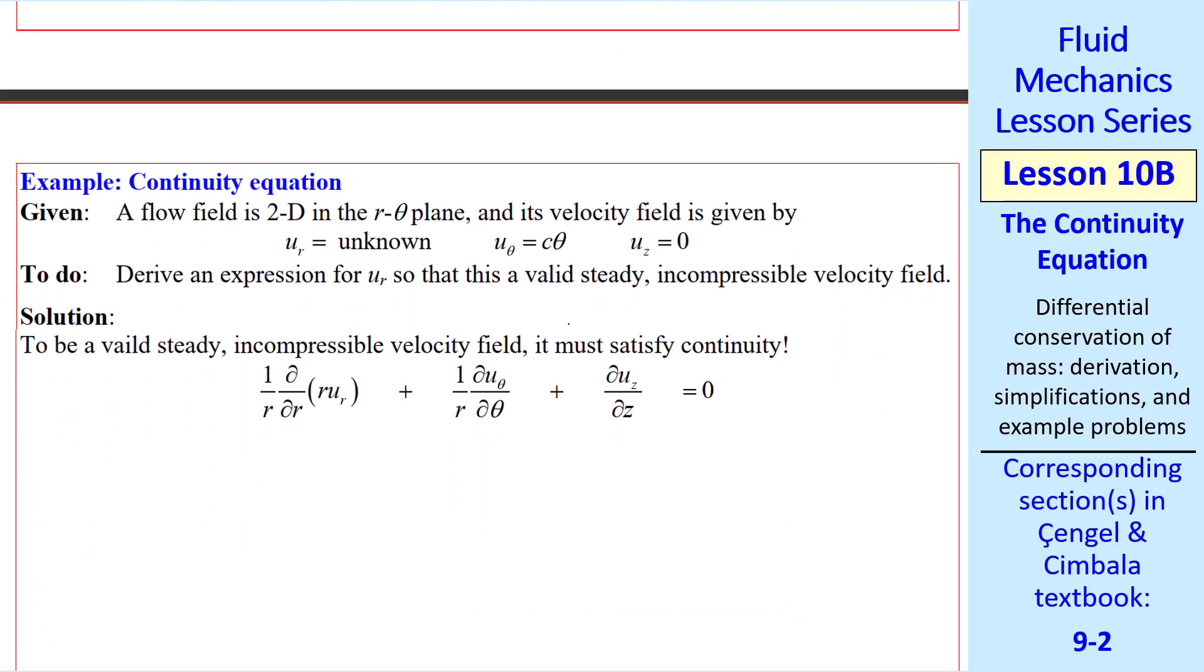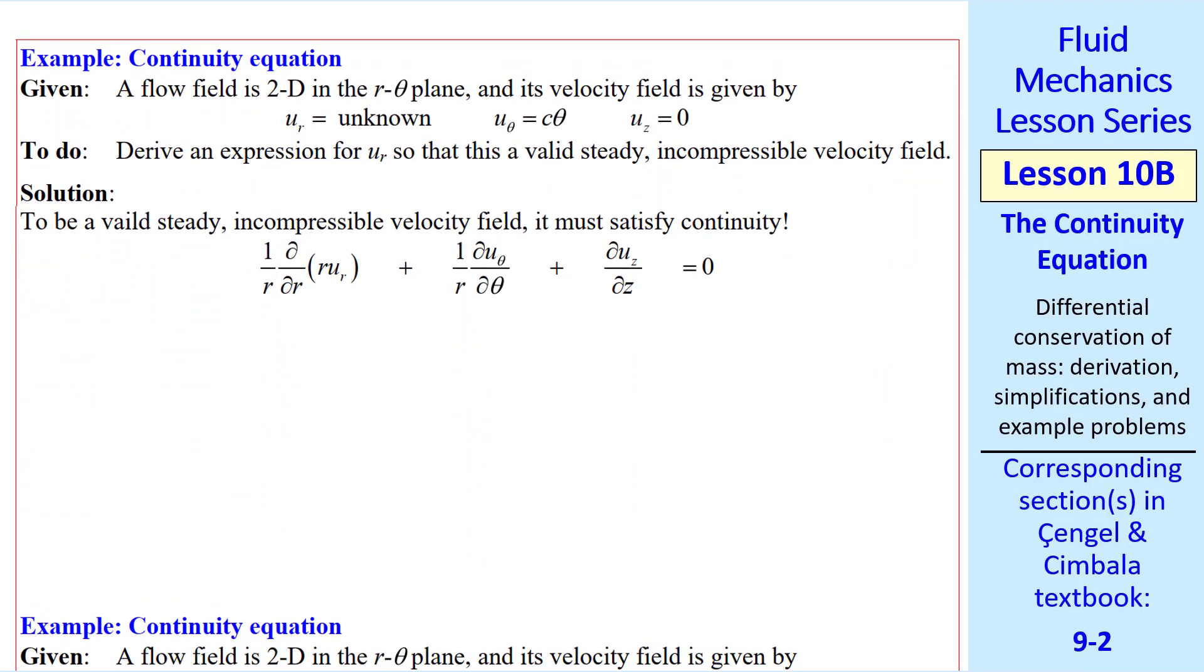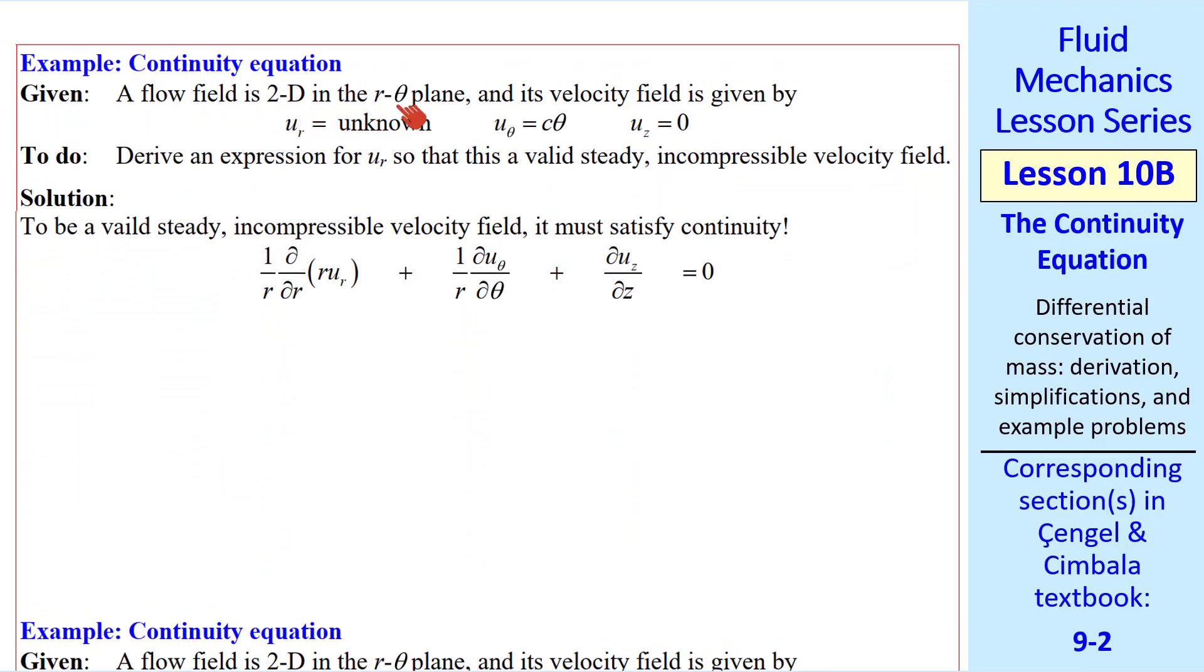Now I'll do two similar problems in cylindrical coordinates. Here we have a 2d flow in the r theta plane, with ur as unknown, and u theta is some constant times theta. Uz is 0, and it's a 2d problem. We want to calculate this unknown velocity component, ur, such that it's a valid, steady, incompressible velocity field. Well, again, we have to satisfy continuity.